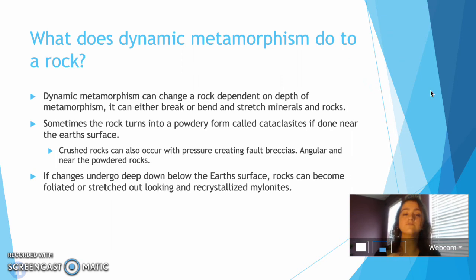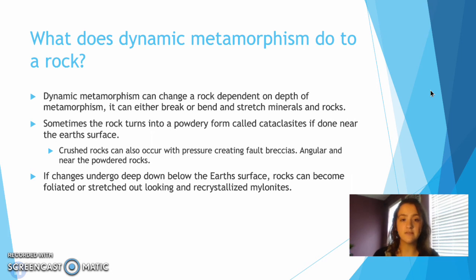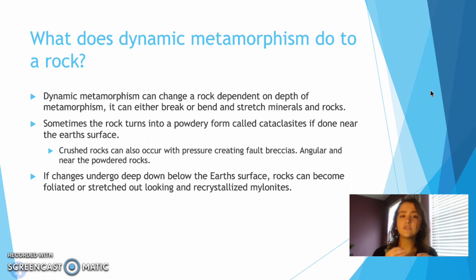What does dynamic metamorphism do to a rock? Dependent on whether it is near the surface or deep below the surface, it can change the rock extremely. It can break, bend, and stretch minerals and rocks, but sometimes it makes the rock very powdery, or it can produce large broken-off pieces. When a rock turns into a powdery form, they're usually called cataclasite, and it's usually formed near the Earth's surface. Crushed rocks can also occur, and they're called fault breccias — they're angular and near the powdered rocks, looking really angular and jagged. This is all mechanical change.